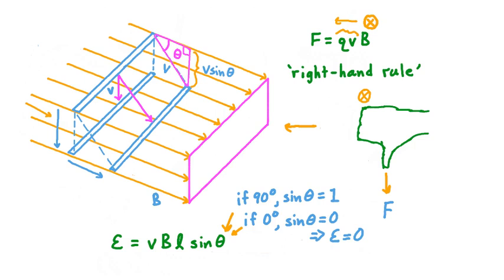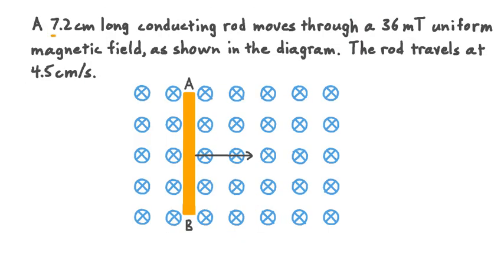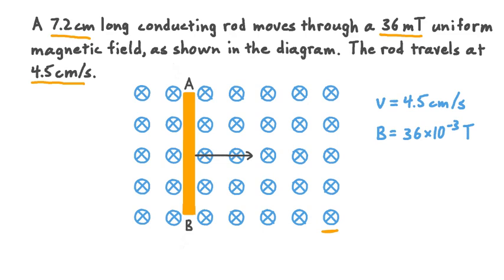Now let's get some practice applying this through an example. A 7.2 centimeter long conducting rod moves through a 36 millitesla uniform magnetic field. The rod travels at 4.5 centimeters per second. In the diagram we see a conducting rod with two ends — the top end called A and the bottom end called B — in motion at a steady speed V through a uniform magnetic field directed into the screen. The magnetic field B equals 36 millitesla, or 36 times 10 to the negative third tesla. The length of the conducting rod, L, is 7.2 centimeters.